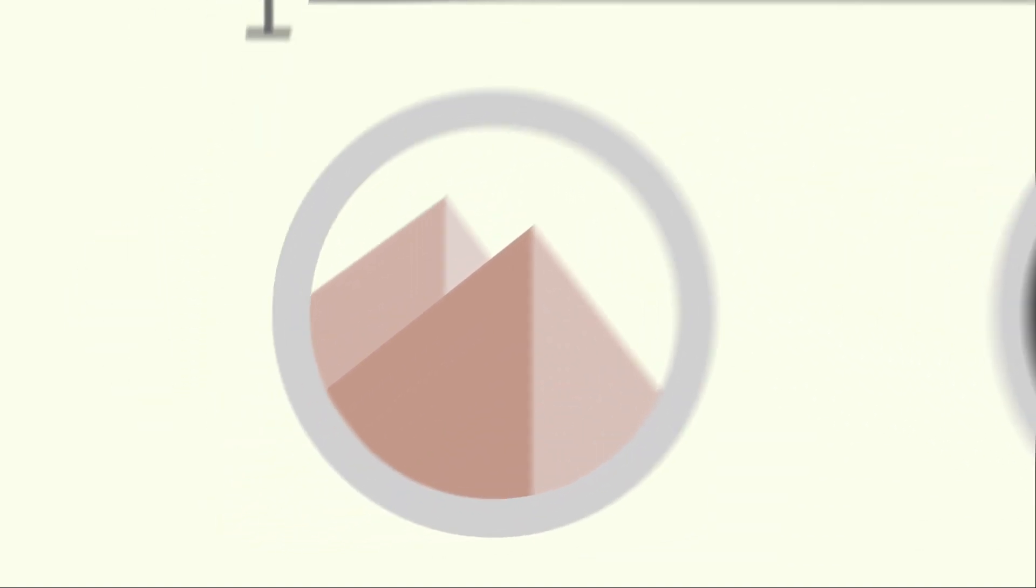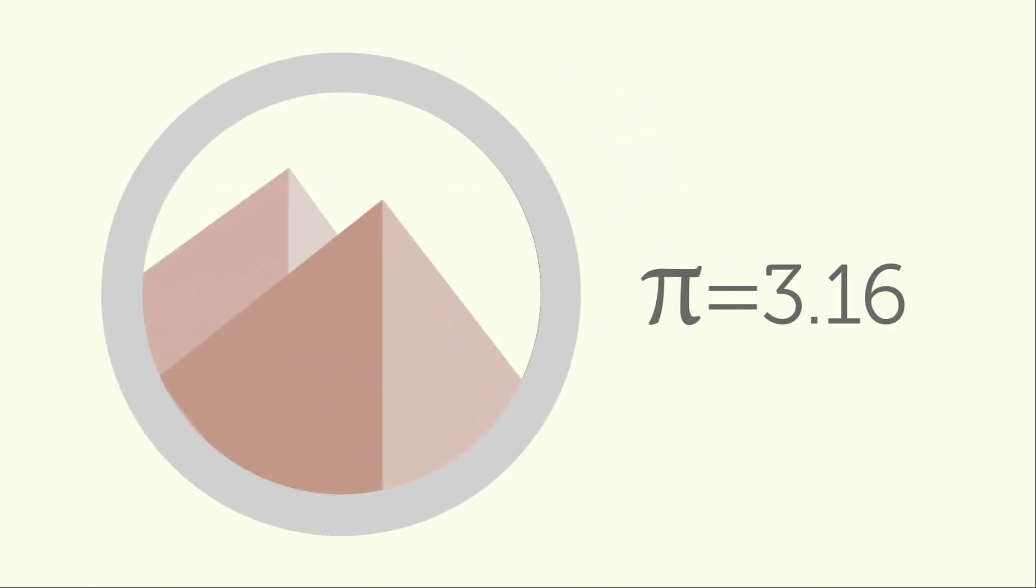In fact, the first calculations done to find pi weren't about the relationship between the diameter and the circumference of a circle, but in an attempt to square the circle. These measurements were done by Egyptians around 2000 BC, and gave a value accurate to two digits.